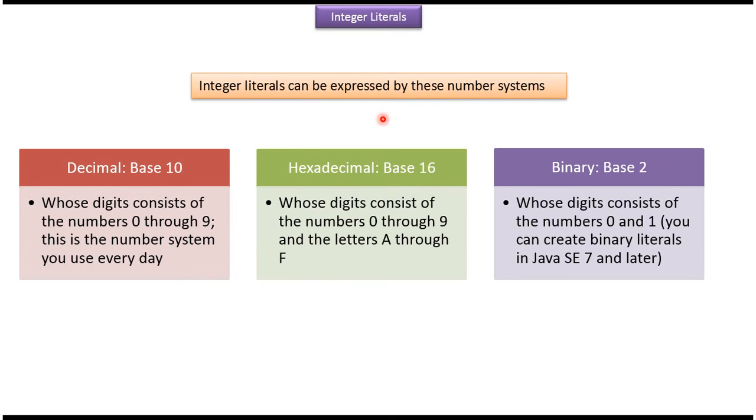Integer literals can be expressed by the decimal number system, hexadecimal number system, and binary number system. The decimal number system, whose digits consist of the numbers 0 through 9, is the number system we use on a daily basis.